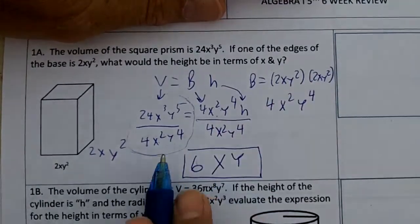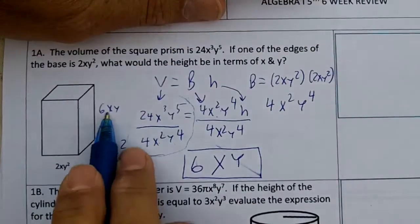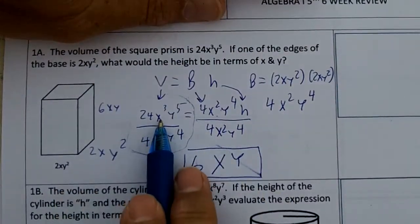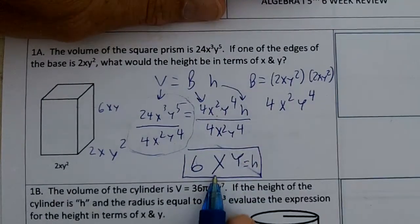So this is our height right here. We put 6xy right here. If we multiply these, we would get the 24x³y⁵. So our height is 6xy.